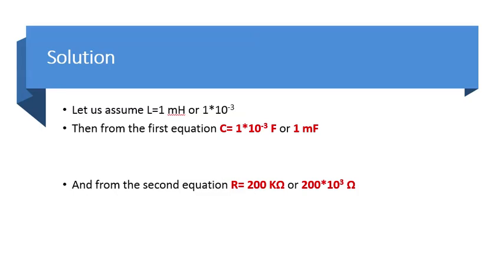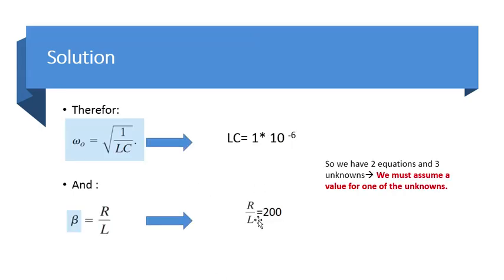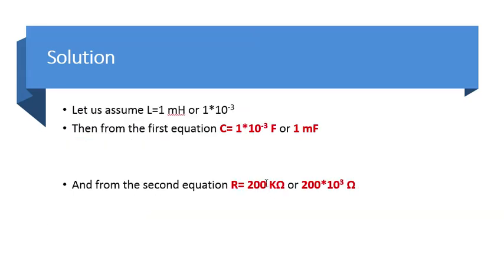And also, if I replace L here in the second equation, if I replace L with 1 times 10 to the power of minus 3, I will find R to be 200k, or 200,000 ohms.